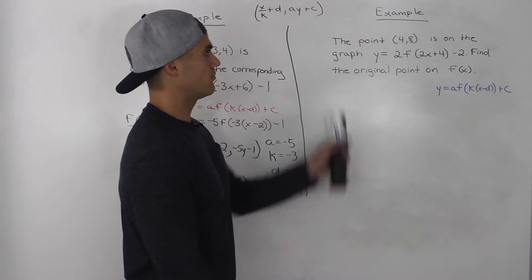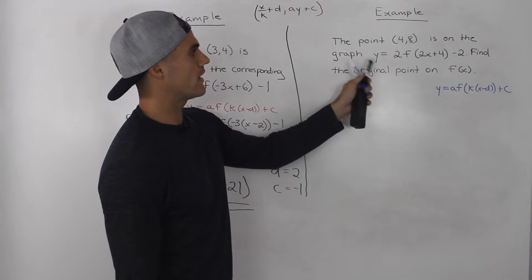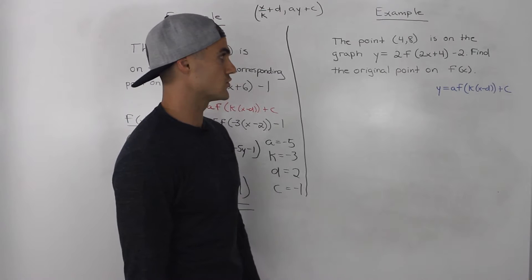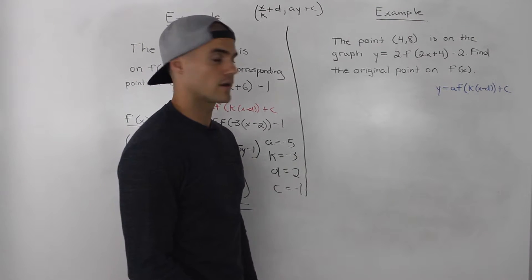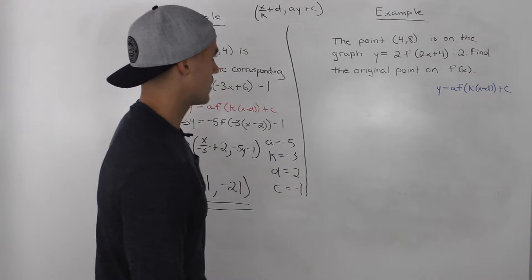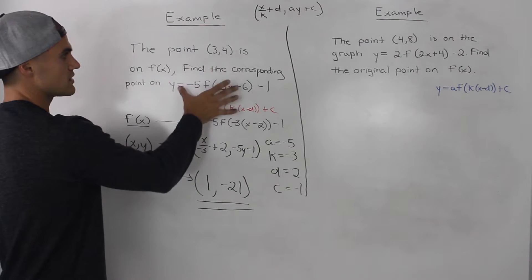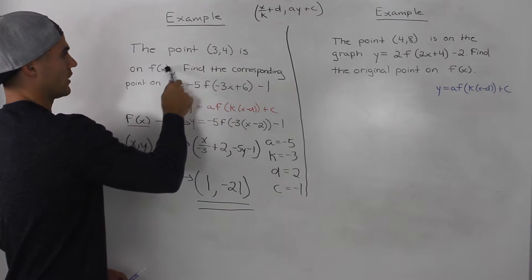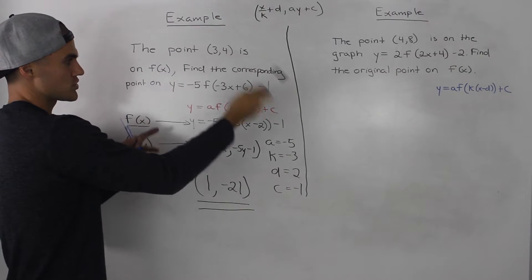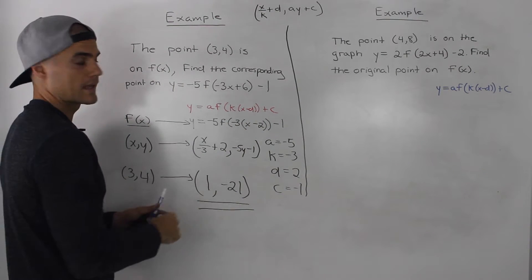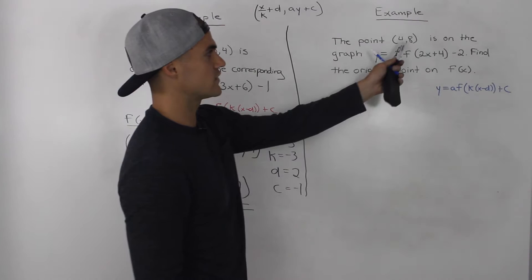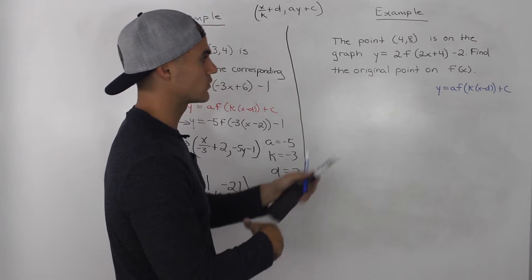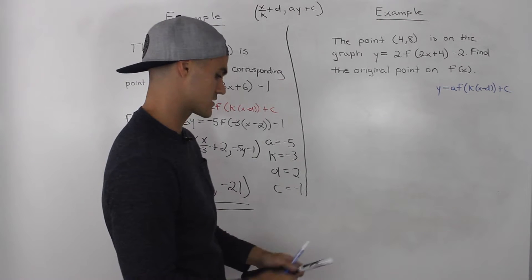For the next example: the point (4, 8) is on the graph y equals 2f of 2x plus 4, minus 2. Find the original point on f(x). This sounds similar to the previous question but it's not. Before, we were given a point on f(x) and had to find the corresponding transformed point. In this case, we're given the transformed point and have to find the original point on f(x).